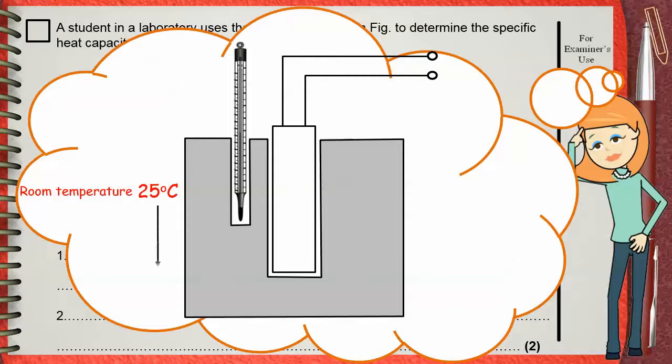Start your experiment with a temperature that is about 10 degrees below the room temperature and finish it with 10 degrees above room temperature. It doesn't need to be 10. You can choose it 20 or 15.